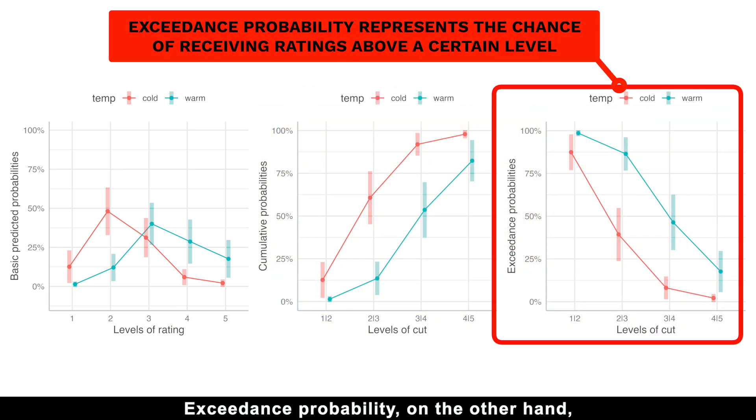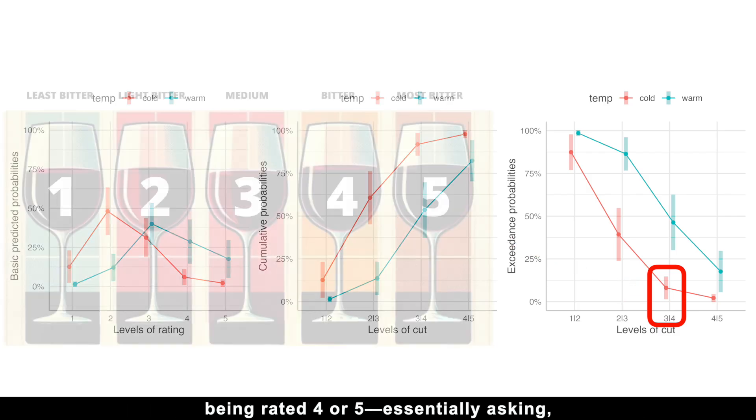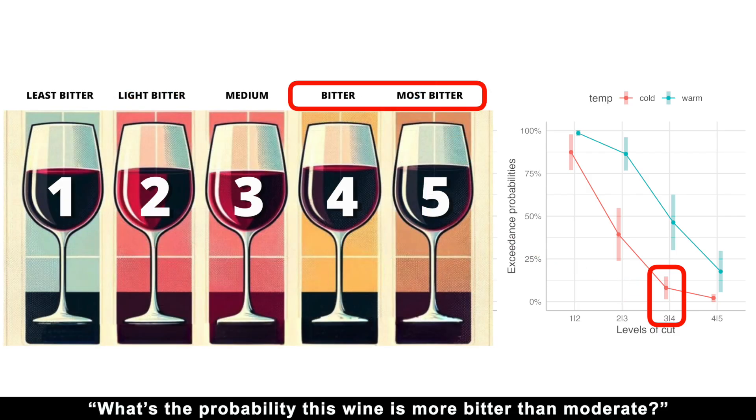Exceedance probability, on the other hand, represents the chance of receiving ratings above a certain level. Using the same example for a wine rated 3, exceedance probability would be the likelihood of the wine being rated 4 or 5, essentially asking what's the probability that wine is more bitter than moderate.